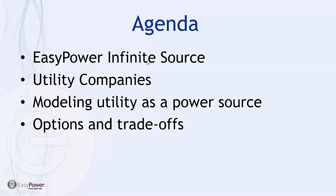We're going to talk a little bit about Infinite Power Source in EasyPower, and then expand upon what it takes to model a utility source — talk in terms of what kind of information and how to get the right kind of information from the utility companies, what to do if you can't get the information you need, and then talk about some of the trade-offs involved with making certain assumptions. There's going to be a lot of data, and at the end of the presentation I will make available the links where you can download the source material. You're welcome to ask questions along the way.